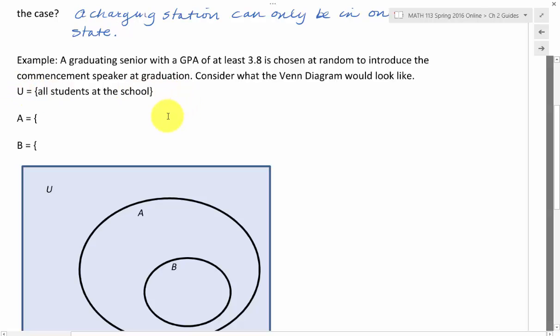The universe is all students at the school, and then we have two sets within that universe. So what is it that has to happen for a student to be chosen to be the graduation speaker? They have to be a graduating senior, and even more refined, they have to have a GPA of 3.8.